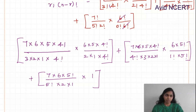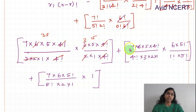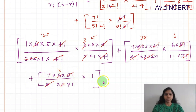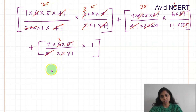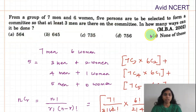Simplifying all terms: 35 × 15 = 525, plus 35 × 6 = 210, plus 21. Adding these together: 525 + 210 + 21 = 756. So the number of ways the committee can be formed is 756. Thanks for watching — if you have any doubts, please let me know in the comments.